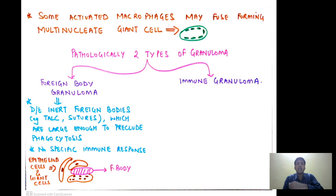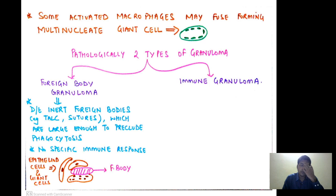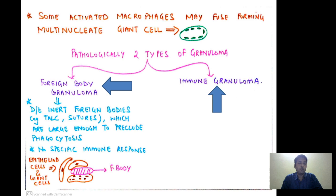Some activated macrophages fuse, forming multinucleate giant cells — a single large cell with abundant cytoplasm and multiple nuclei. Pathologically, there are two basic types of granuloma: foreign body granuloma and immune granuloma. Foreign body granuloma occurs because of an inert foreign body such as talc or sutures, which are too large to be phagocytosed by macrophages. There is no immune response involved in foreign body granuloma; the foreign body is surrounded by epithelioid cells and giant cells.